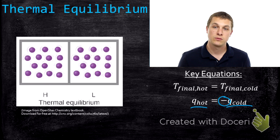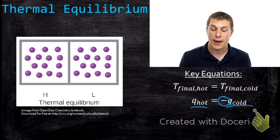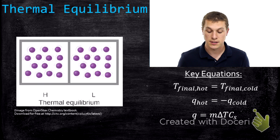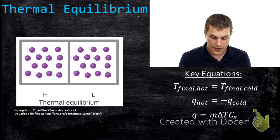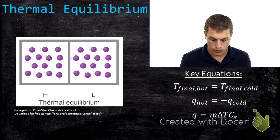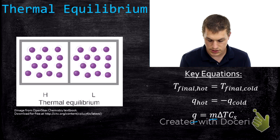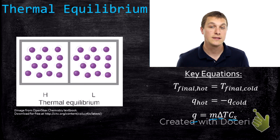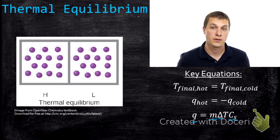The last equation we're going to need to solve thermal equilibrium problems is the heat capacity equation. If you're not familiar with heat capacity, go ahead and watch my video Introduction to Heat Capacities and then come back. Here we see that the heat gained or lost by something — q — is equal to its mass times the change in temperature times the heat capacity of that object, which is a measure of how hard or easy it is to heat something up.